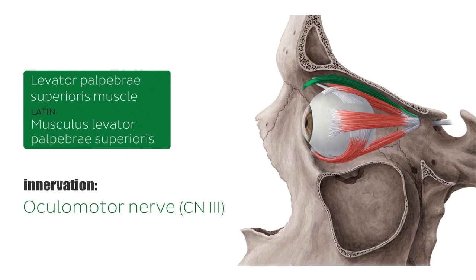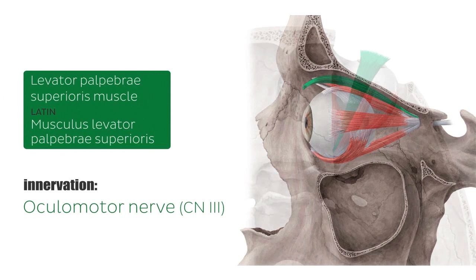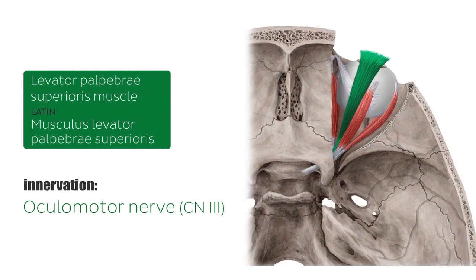Taking a closer look at this image, you can see that this muscle originates from the lesser wing of the sphenoid bone. We can also look at the muscle from a superior view — if we were to section the skull and expose the orbit from above, this is how the levator palpebrae superioris would appear, with the lesser wing of the sphenoid and the origin point clearly visible.